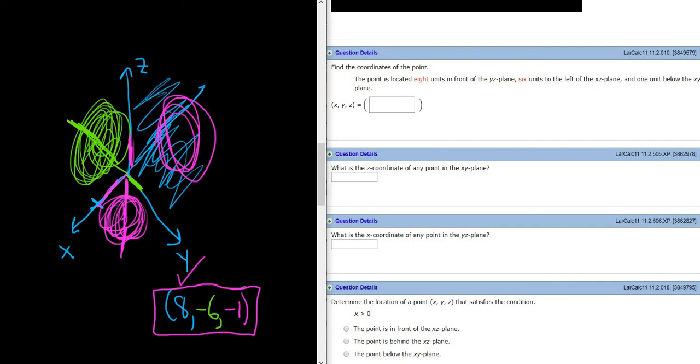6 units to the left of the XZ plane. This is the XZ plane. To the left of it is behind it. So negative 6.